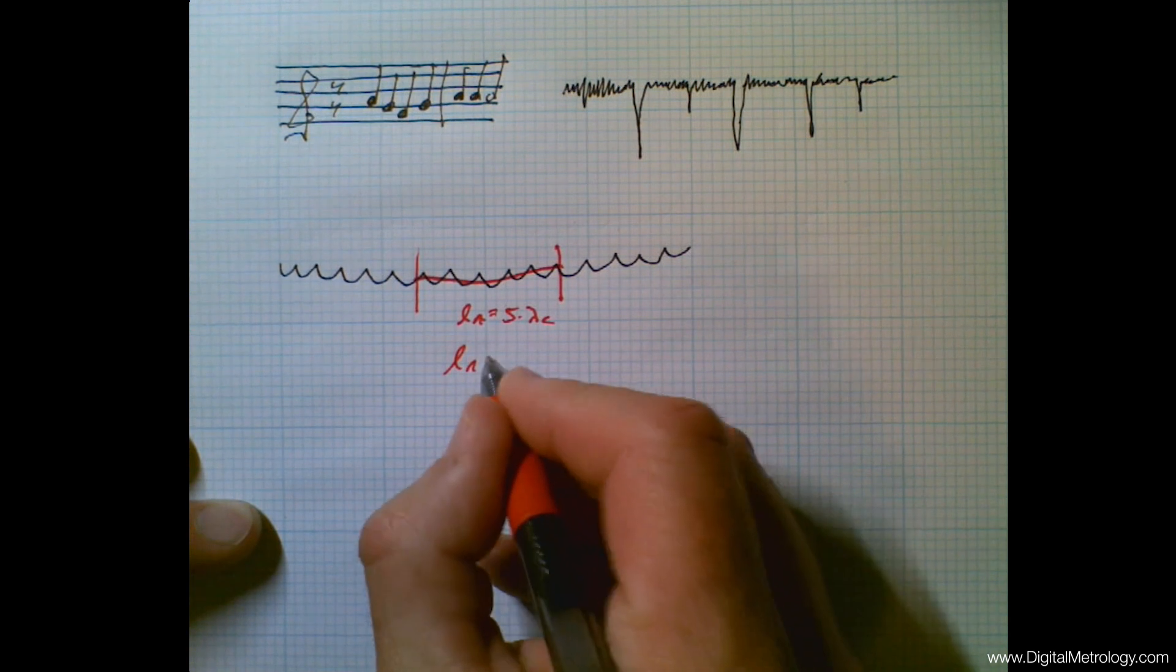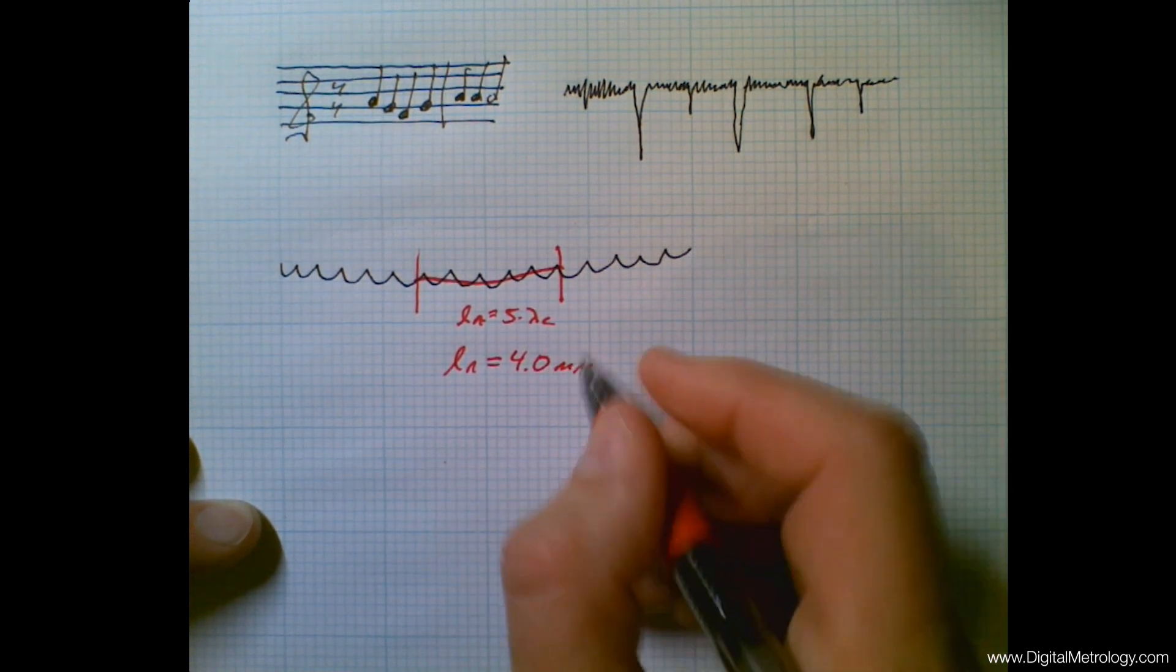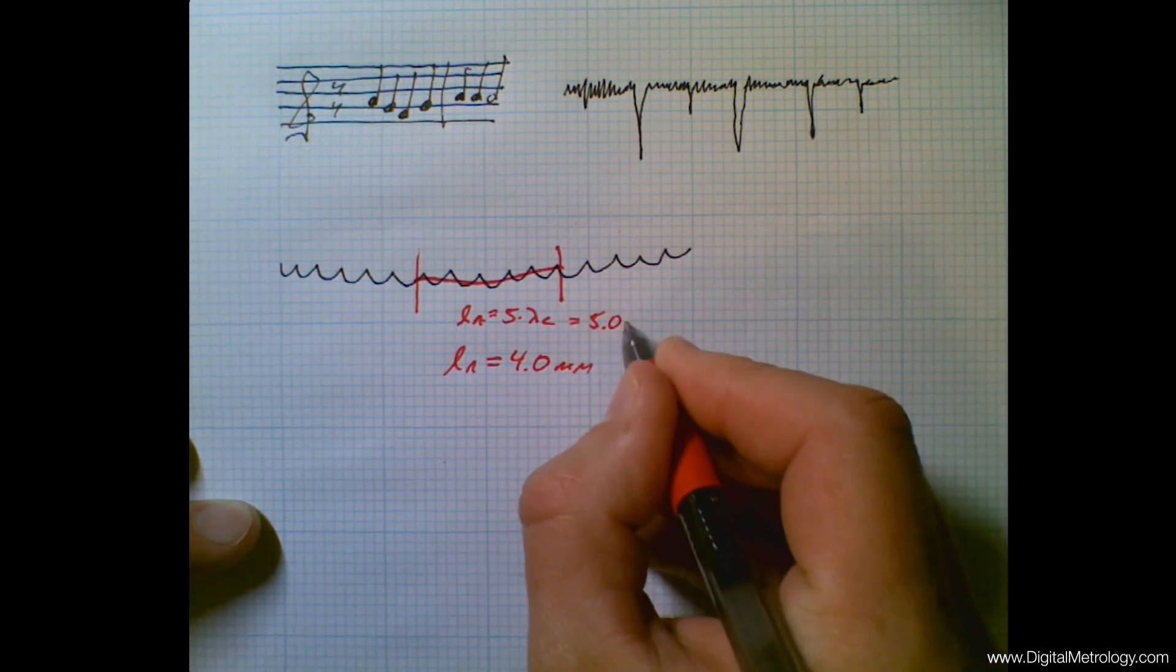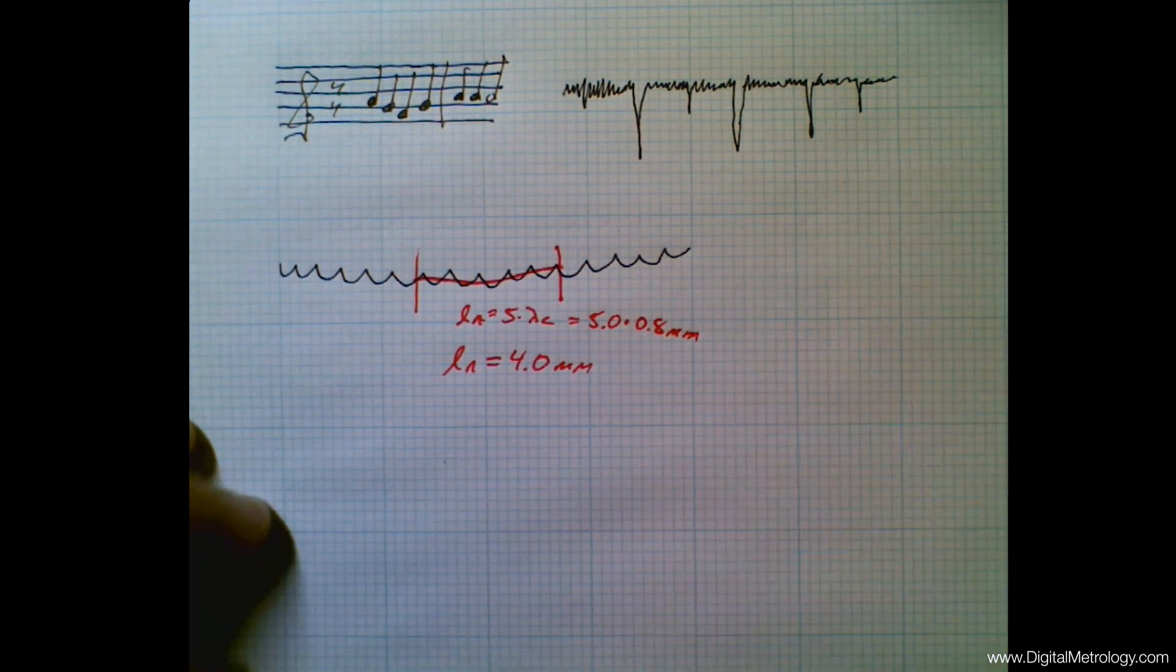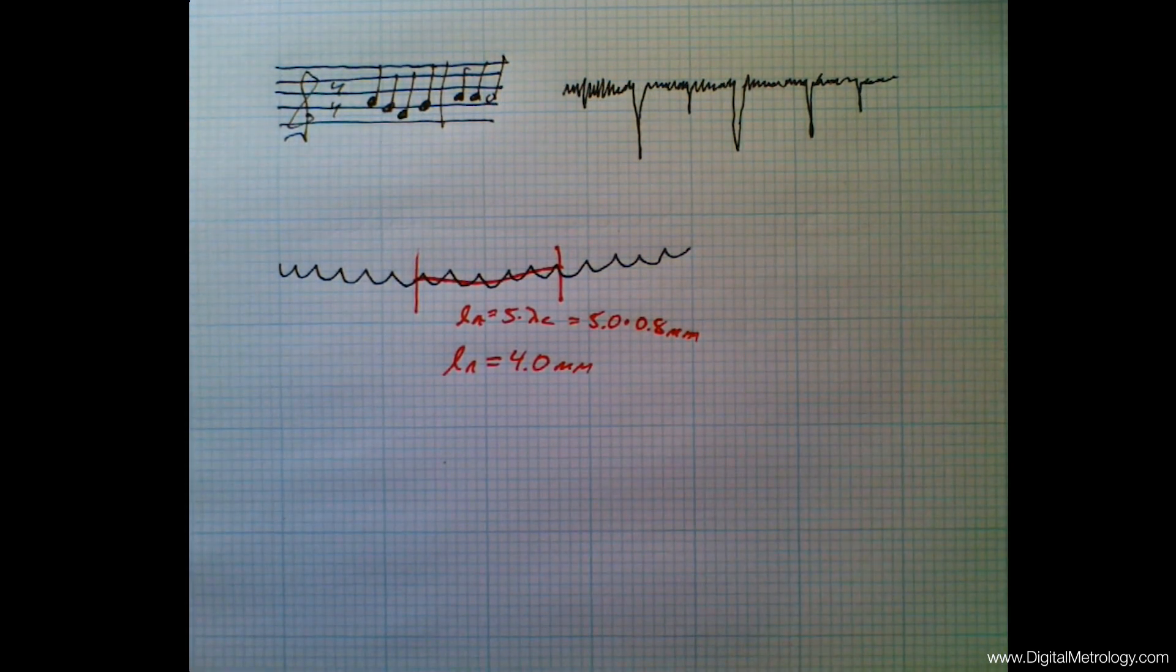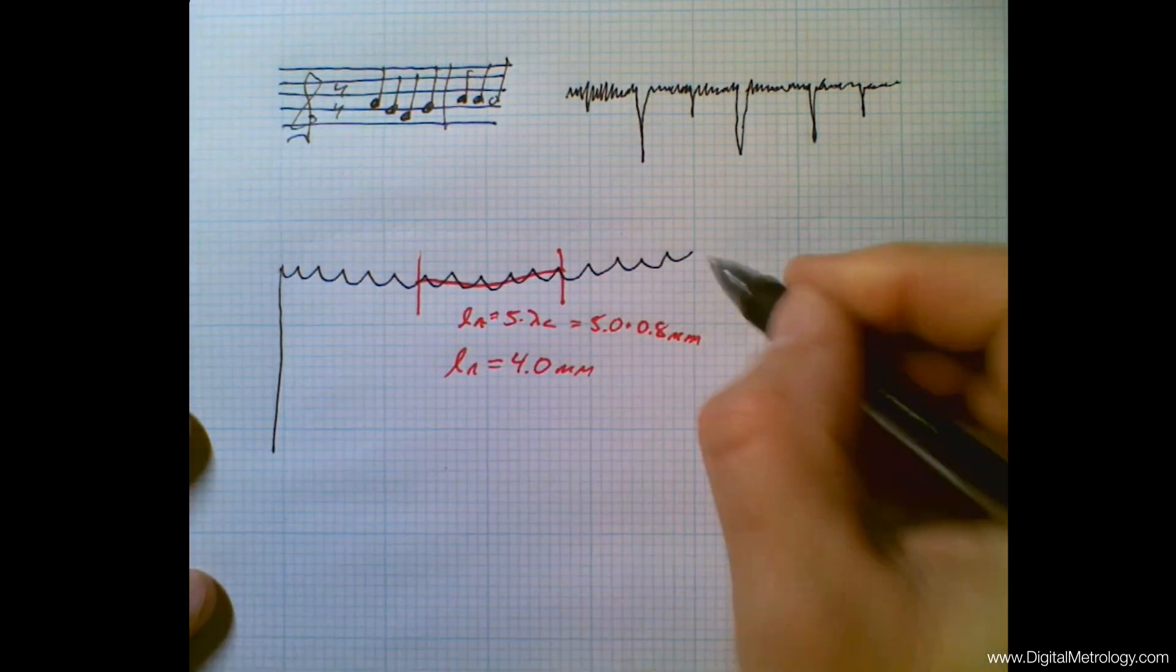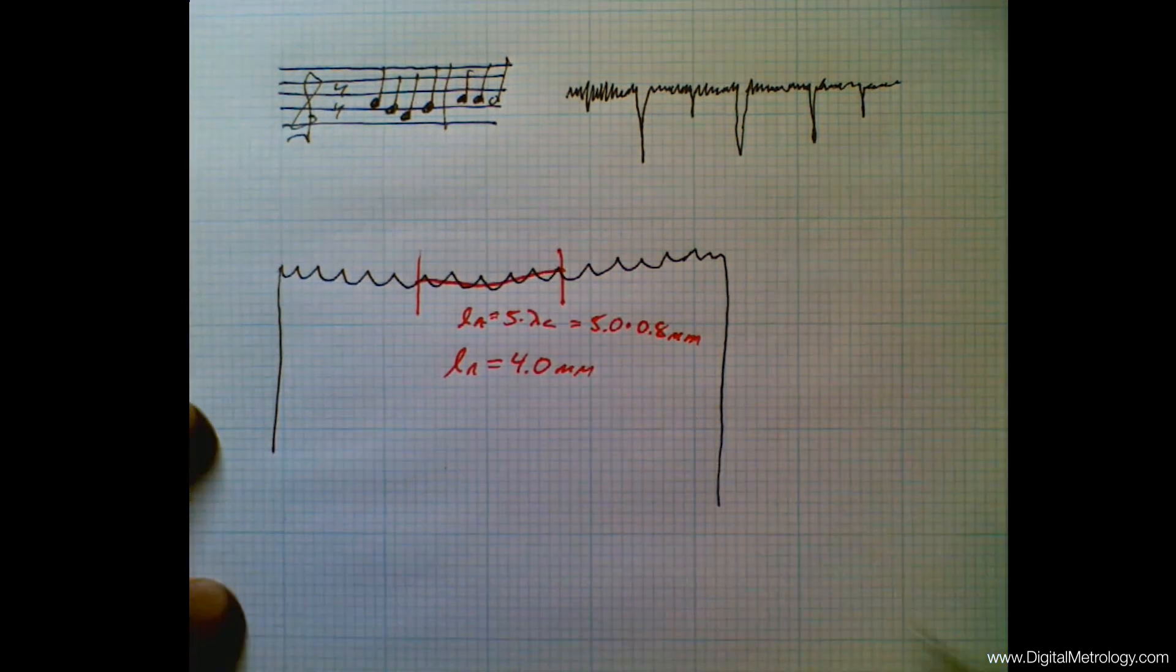Typically this evaluation length is four millimeters, and that's for cases where lambda C the cutoff wavelength is 0.8 millimeters, which is quite common. So this is a typical analysis of a big surface. The surface is quite long. We're going to measure and analyze some area in the middle.